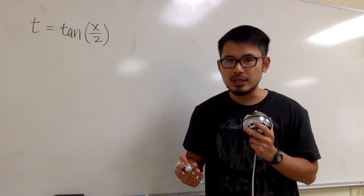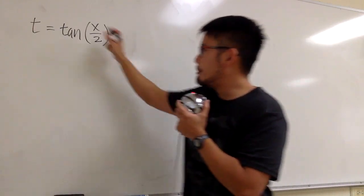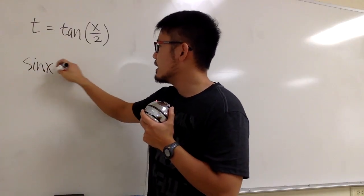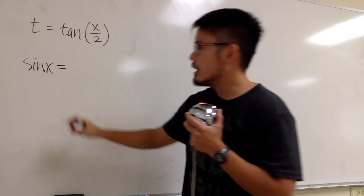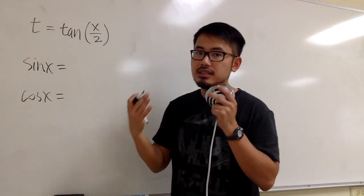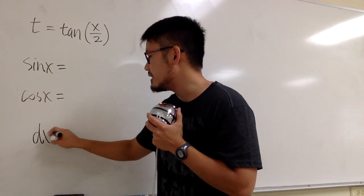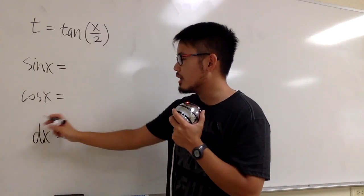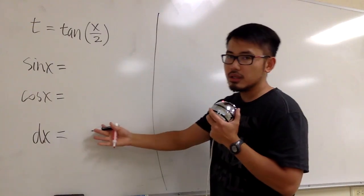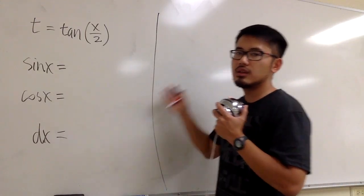The integral is involving sin x and cos x. So based on this, we should figure out what sin x is equal to in terms of t, and what cos x is equal to in terms of t. And because this is an integral in terms of x, we also have dx at the end, so we should figure out what dx is in terms of t. This right here will be my summary.